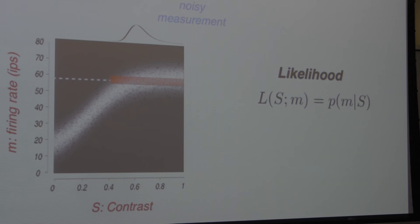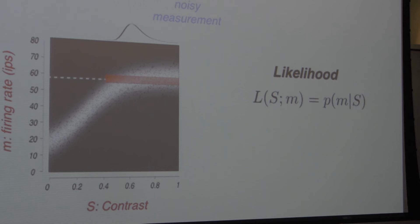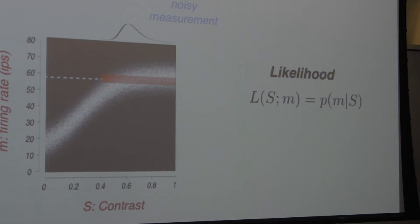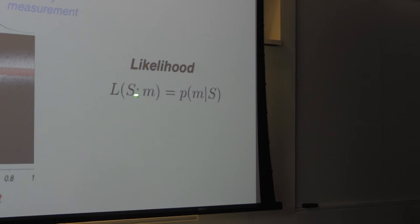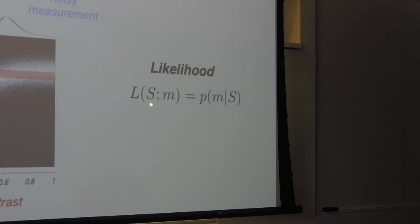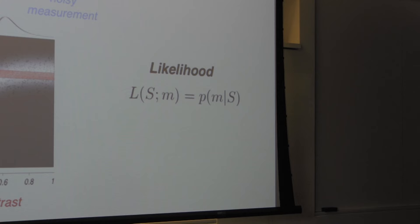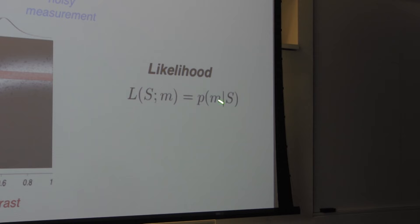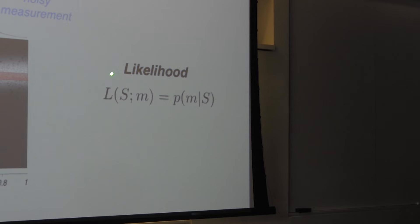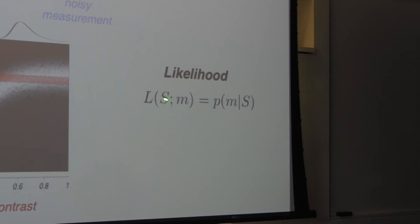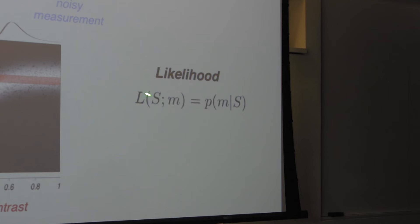This is a subtle, nuanced concept. The likelihood and conditional probability are equal in that if you specify M and S, the two numbers are always the same. The difference is conceptual: the likelihood is most importantly a function of the stimulus — it specifies something about the stimulus, but you need to know the measurement to say anything about the stimulus. If you know the measurement is 58 and you say, now what is the stimulus? — that's the likelihood. They represent something very different even though they're governed by the same functional form.